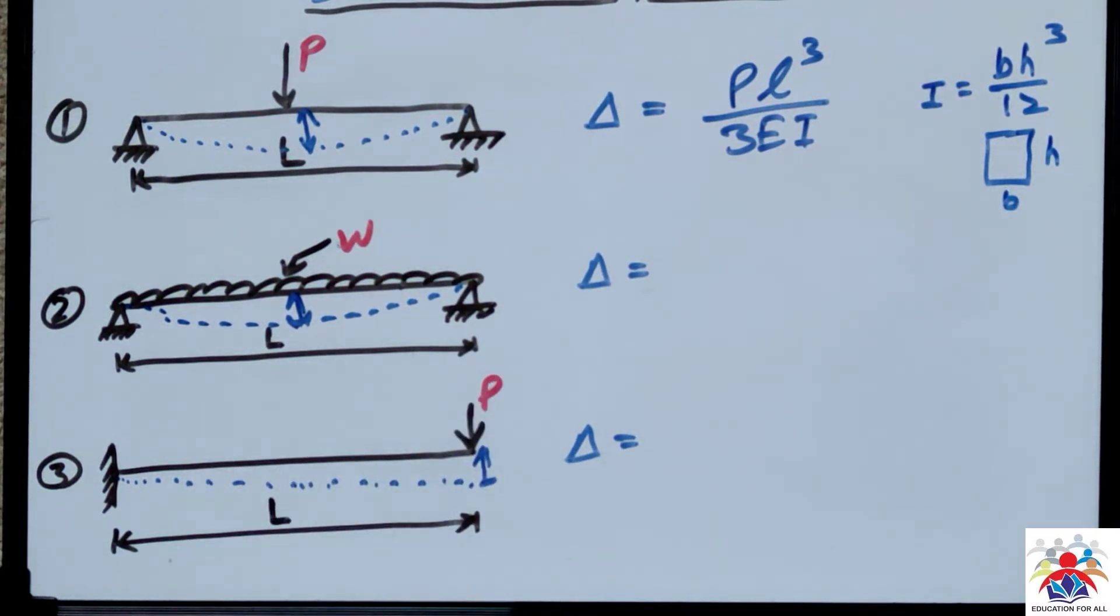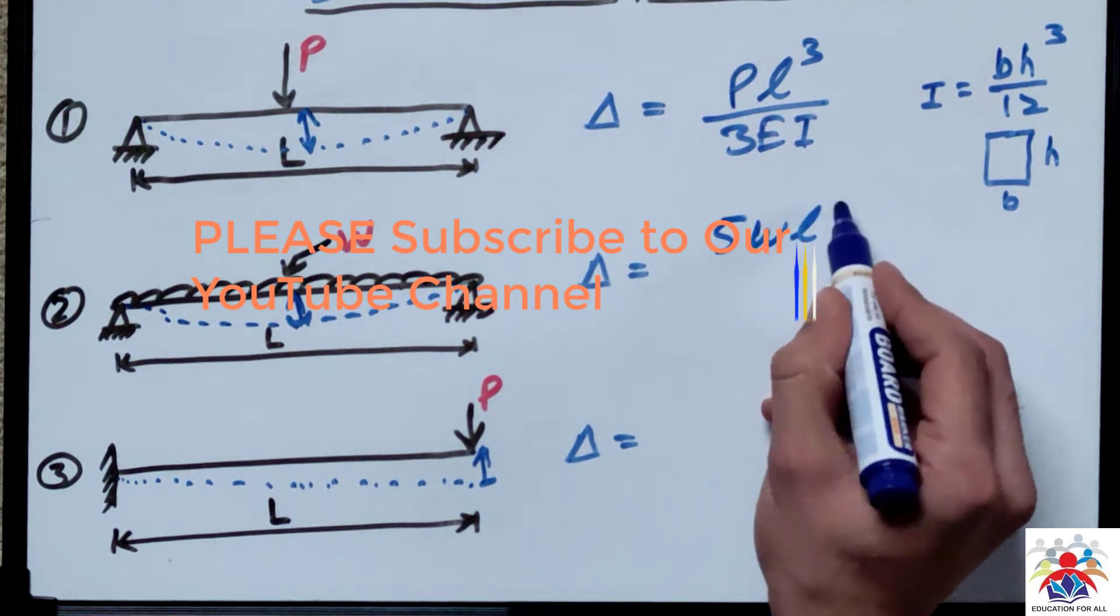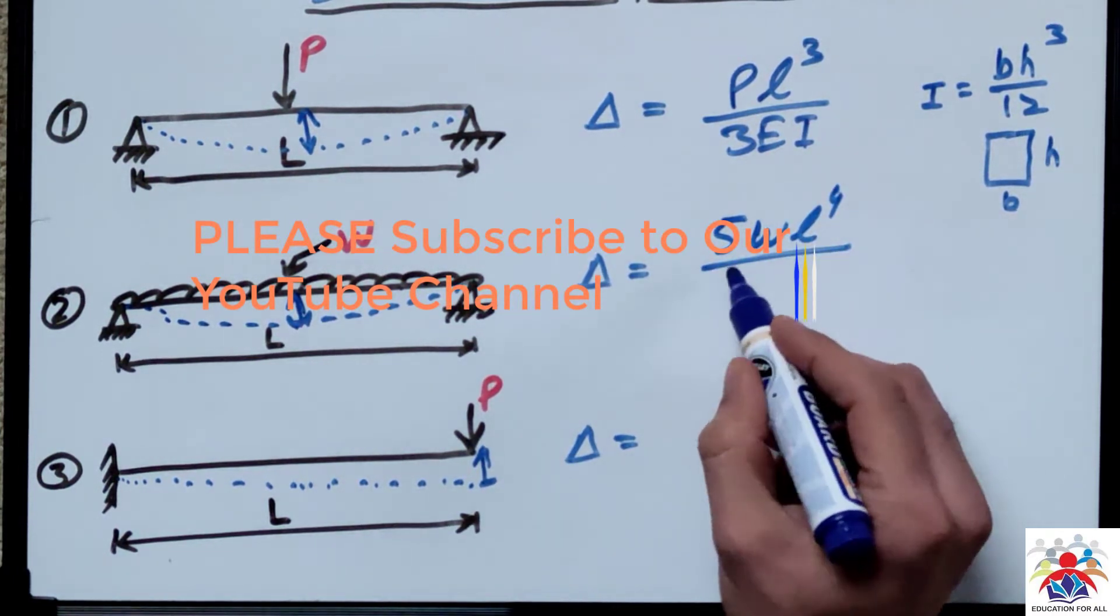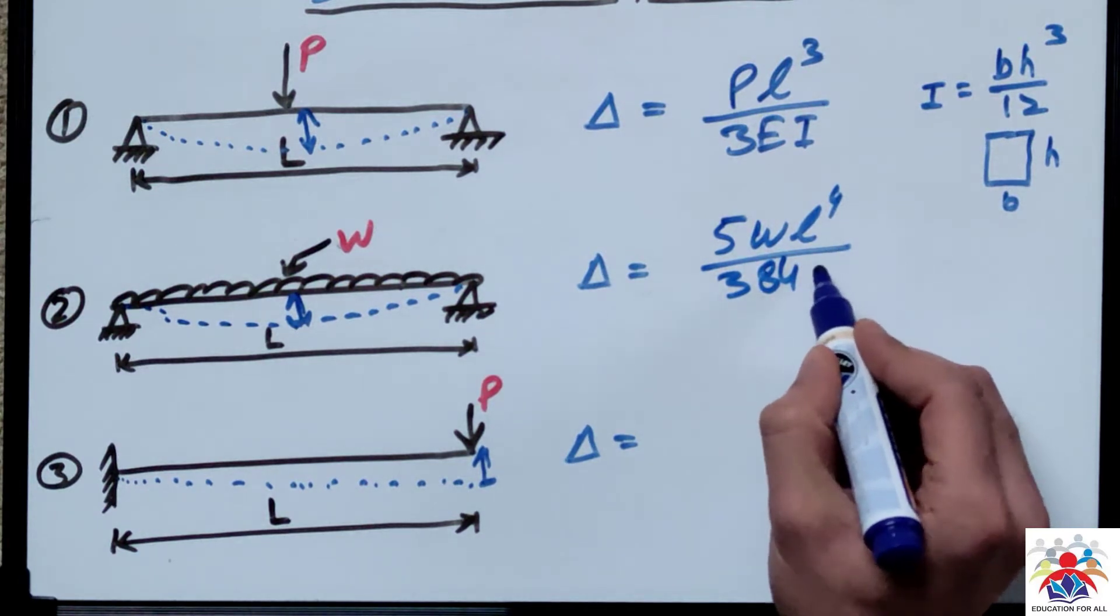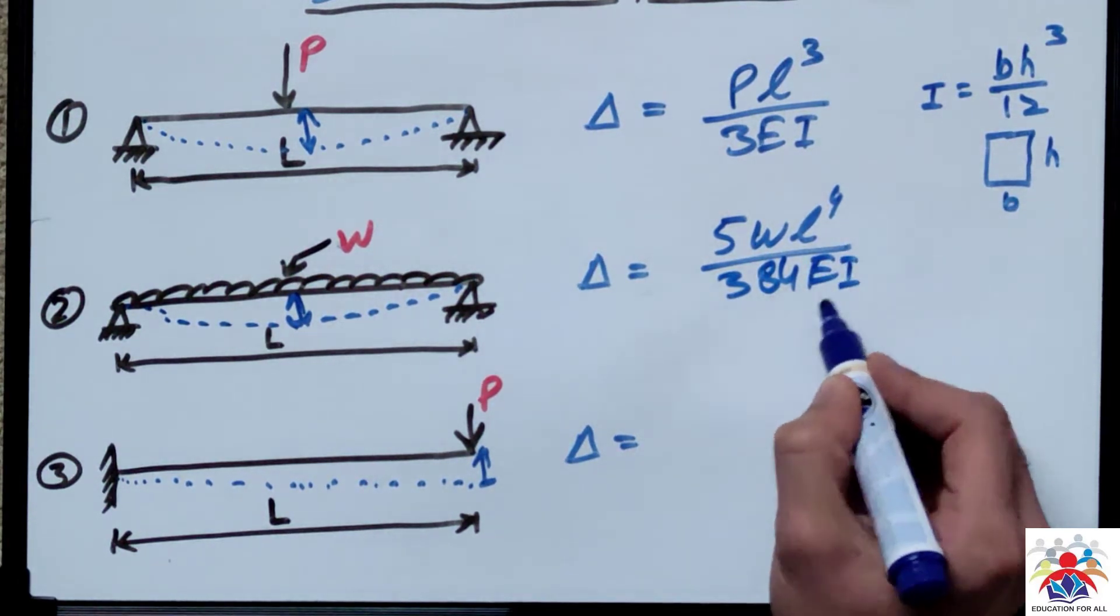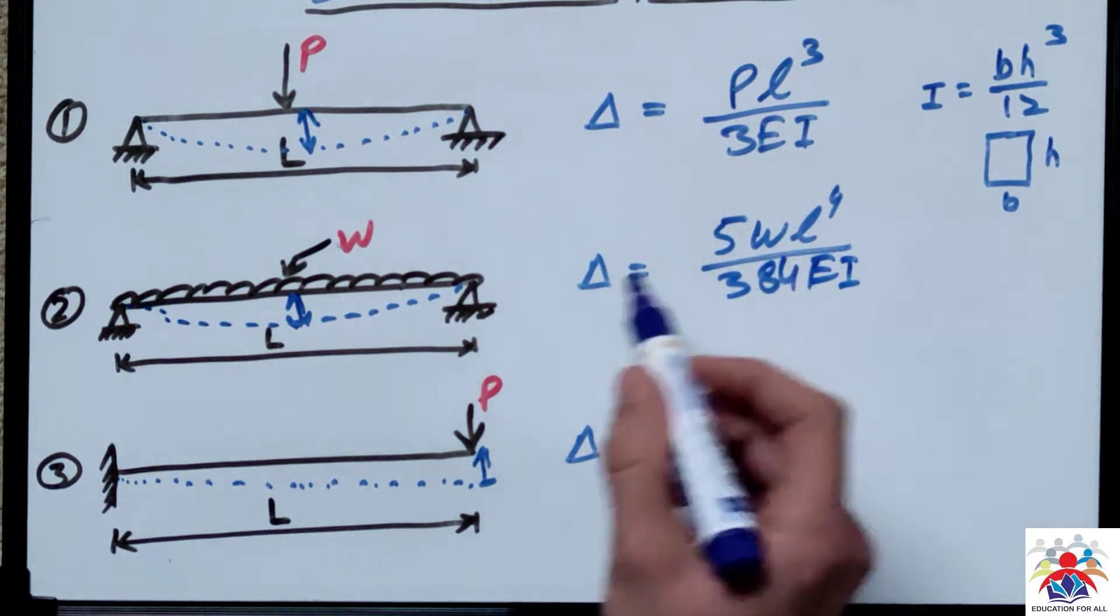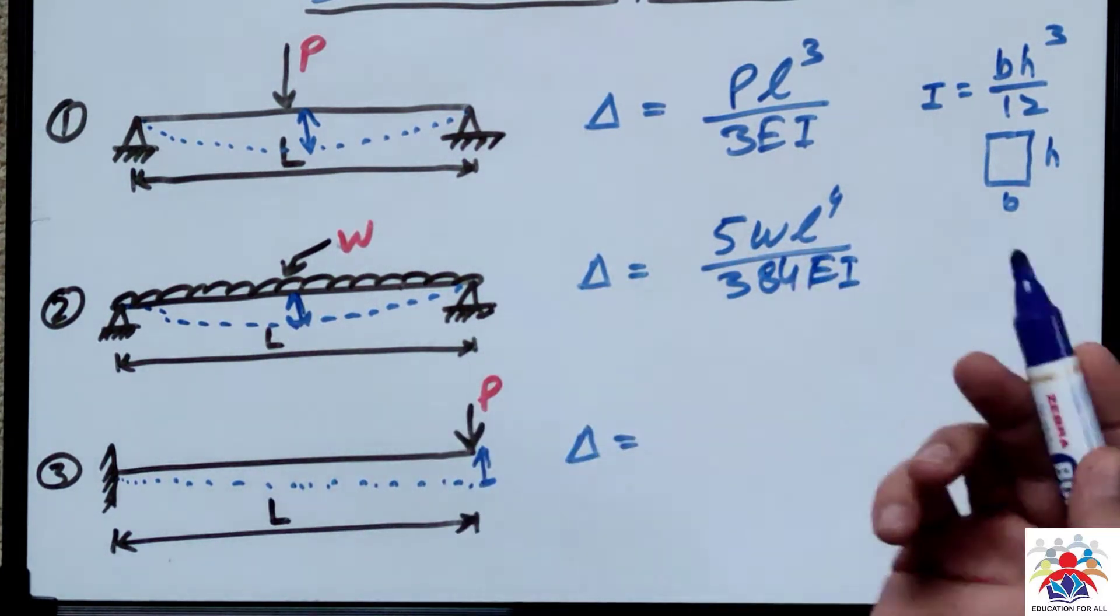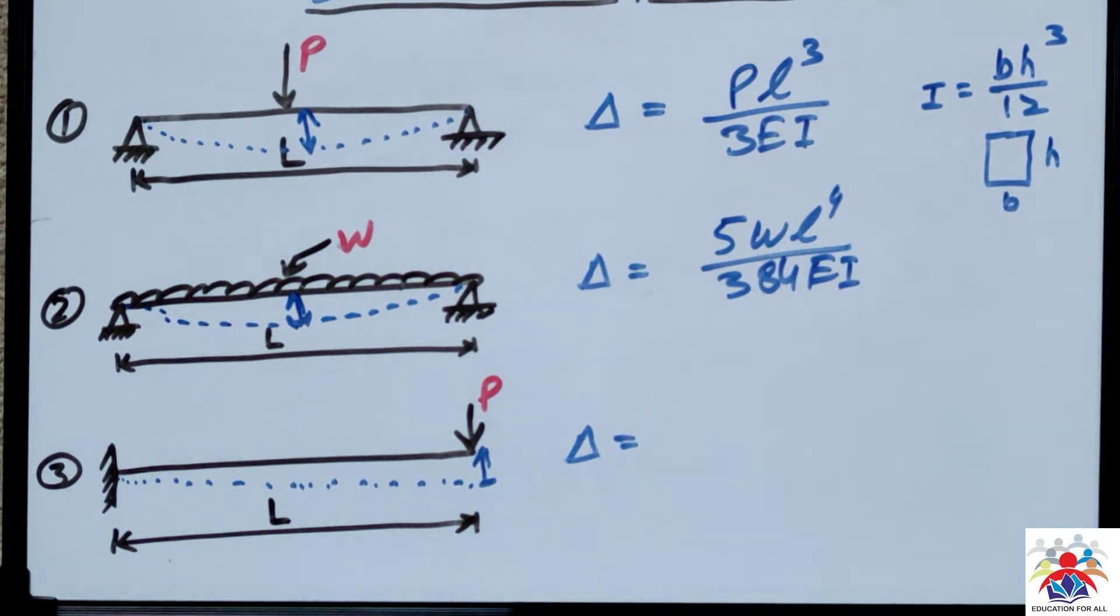Let's move on to the next beam, which is simply supported beam with UDL on its entire length. The deflection formula would be 5 W L to the fourth divided by 384 E I. E is Young's modulus and I is a moment of inertia. W is a weight, L is a length, and 5 and 384 are factors.